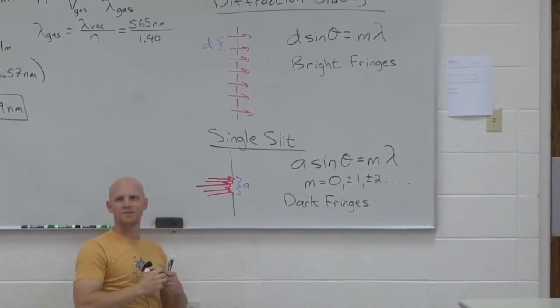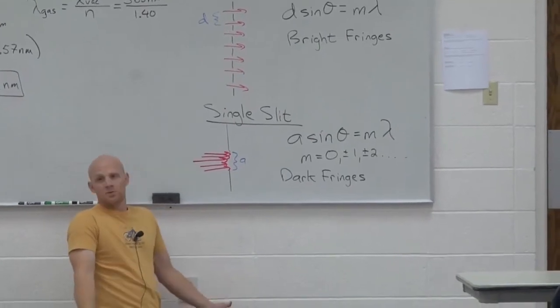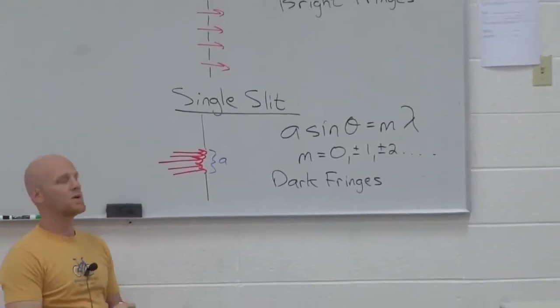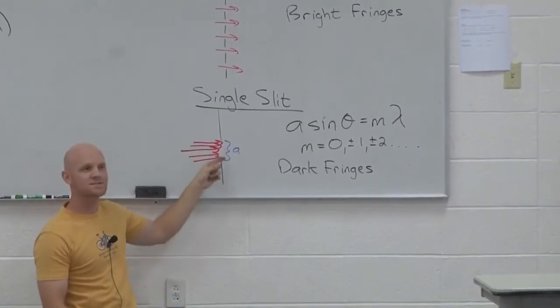This A here, notice we don't have a D anymore. Why don't we have the letter D in this one? There is no multiple slits so I can't have a distance between them. What A ends up being is the width of the slit, the slit itself.